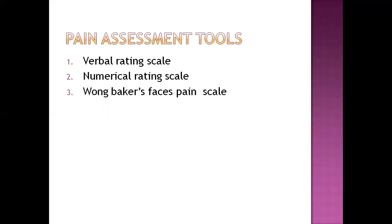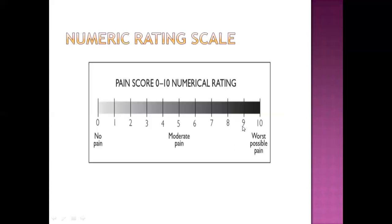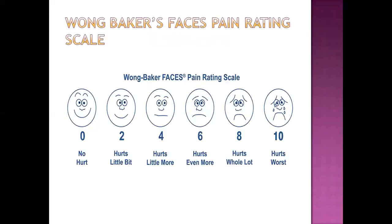Next are pain assessment tools. For assessment of pain, we have the verbal rating scale, numerical rating scale, and Wong-Baker Faces Pain Rating Scale. The verbal rating scale is a standard scale you give to the patient and ask them to choose a level. The numerical rating scale similarly asks the patient to choose a number, dividing pain into no pain, mild, moderate, and worst possible pain. The Wong-Baker Faces Pain Rating Scale, used by most hospitals, presents various facial expressions and the patient chooses a face; we then numerically identify the level of pain.